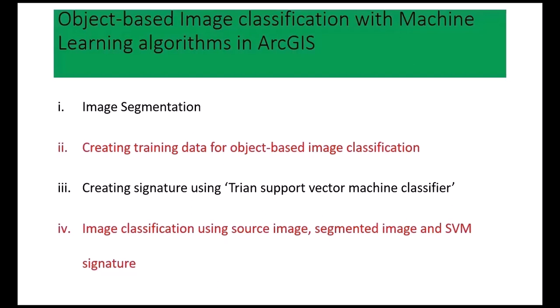In this exercise we will cover four steps. The first step is image segmentation. The second step is creating training data for object-based image classification. The third step is creating a signature using the Train Support Vector Machine classifier. Finally, we classify an image using the source image, segmented image, and the signature created using the Train Support Vector Machine classifier.